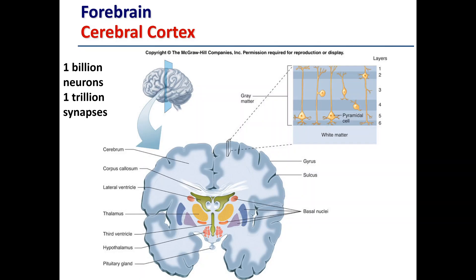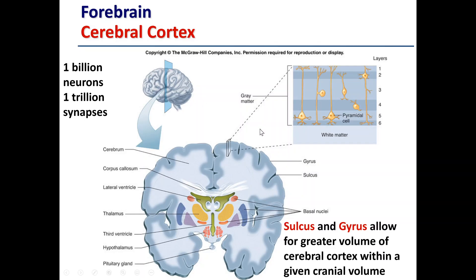In the cerebral cortex there are roughly a billion neurons and within that about a trillion synapses — connections to other neurons. The sulcus and gyrus are the two structures that maximize the volume that can fit within the cranium. The sulci are the hollow folds and the gyri are the ridges on top, all allowing us to maximize the number of neurons in the available space.